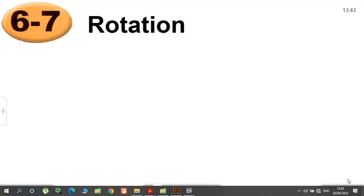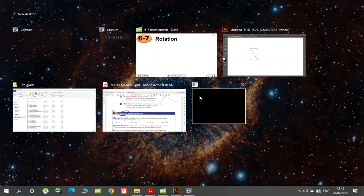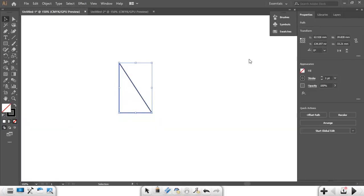6-7 rotation. Rotation means turning a shape around a constant point. So let's give some examples.